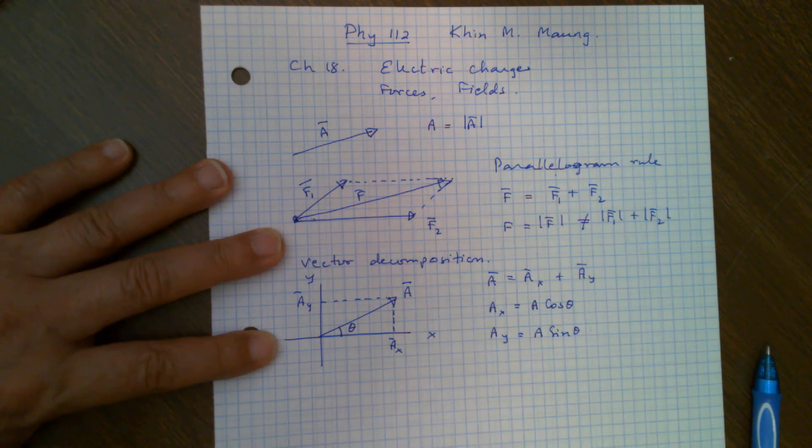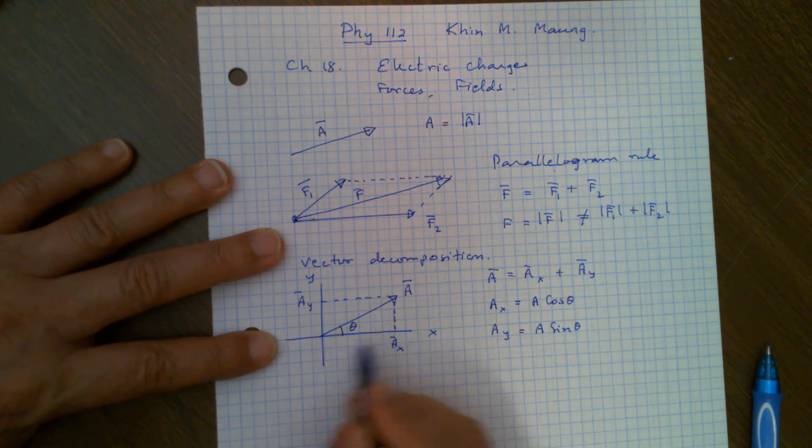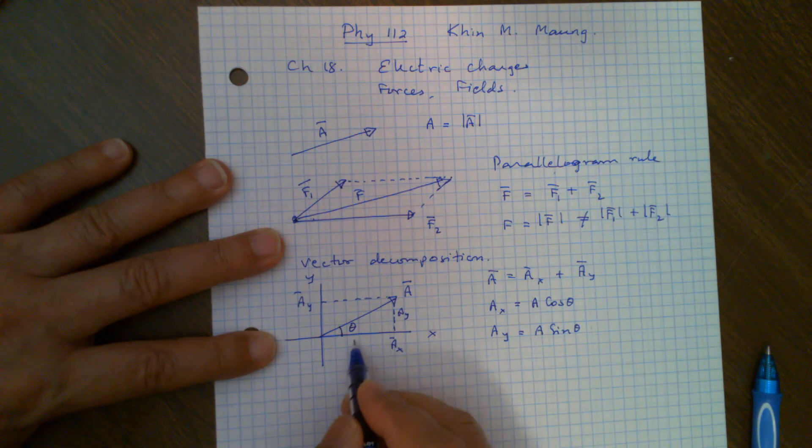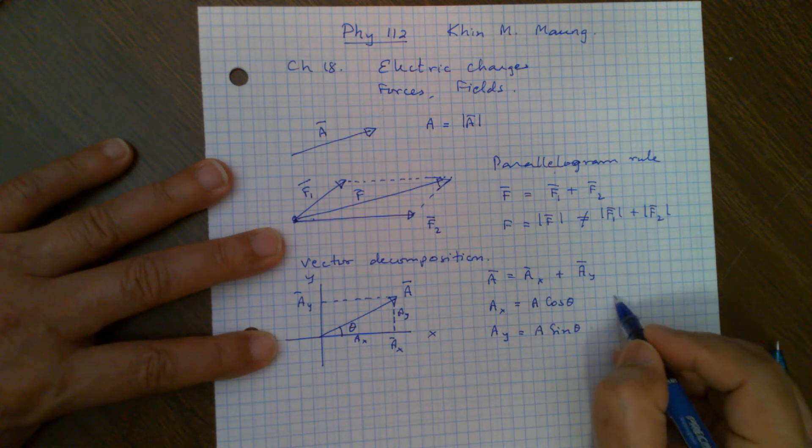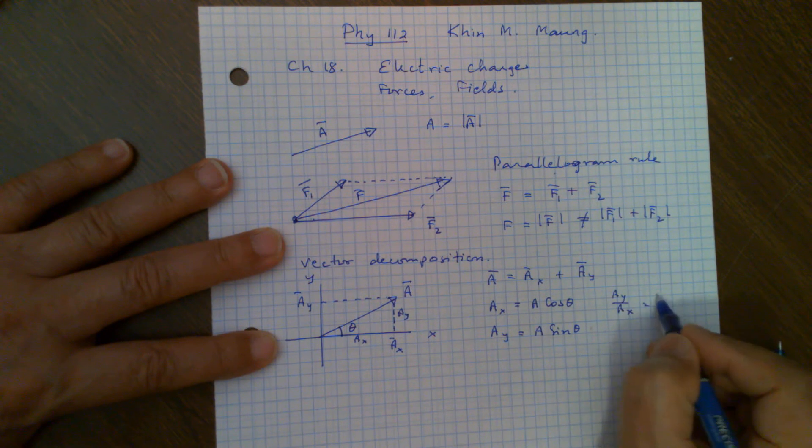And we still write vector A is vector AX plus vector AY. Obviously, the magnitude of A is not the same as magnitude of AX plus magnitude of AY. Now, let's suppose the angle of this vector A and the x-axis is theta. Then I can see that AX, the magnitude of vector AX, this length is actually magnitude of A times cosine theta. Similarly, AY is equal to magnitude of A times sine theta. And if you're not sure why, you can see that AY divided by AX equals tangent theta.